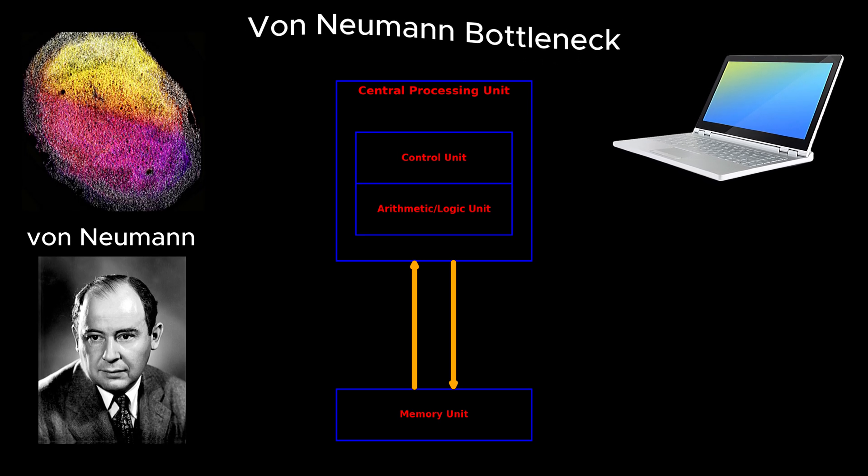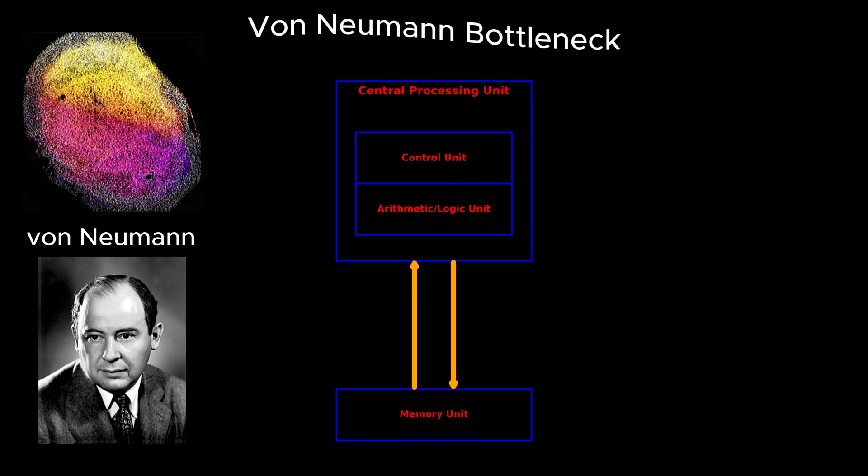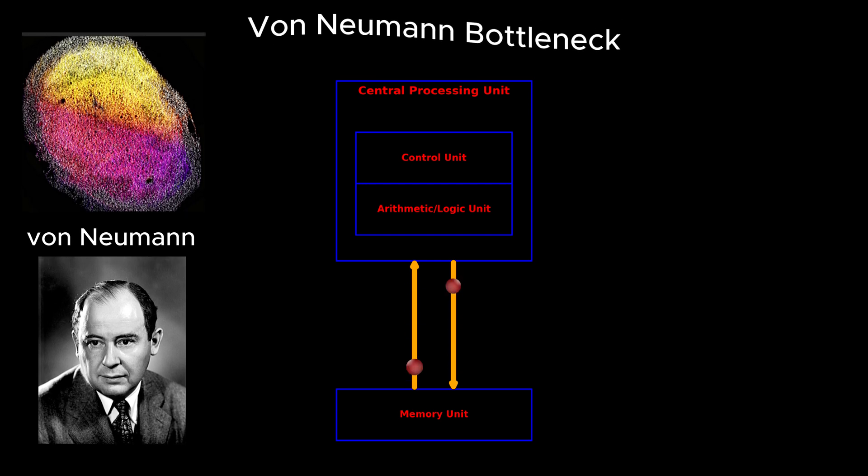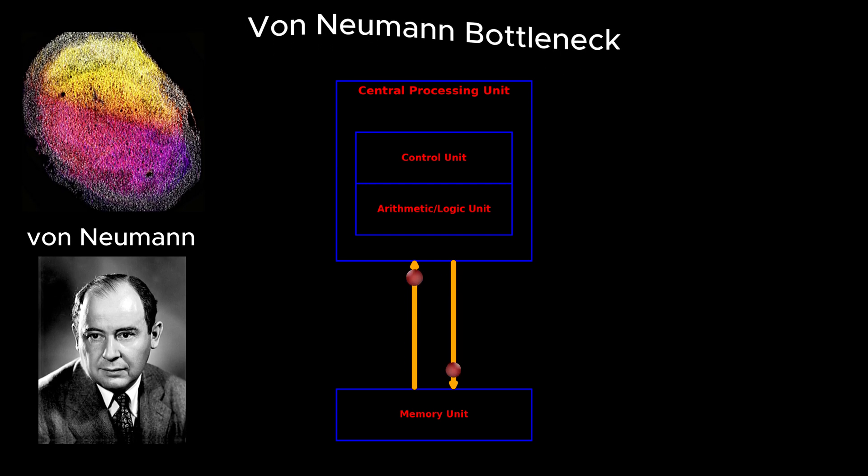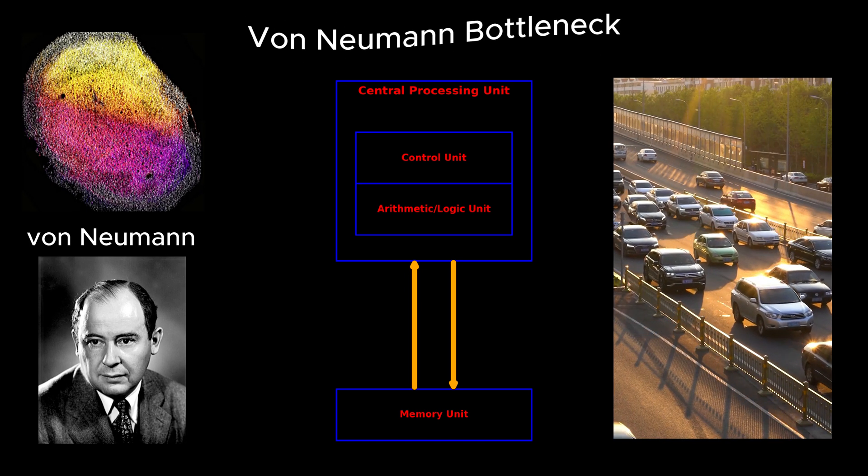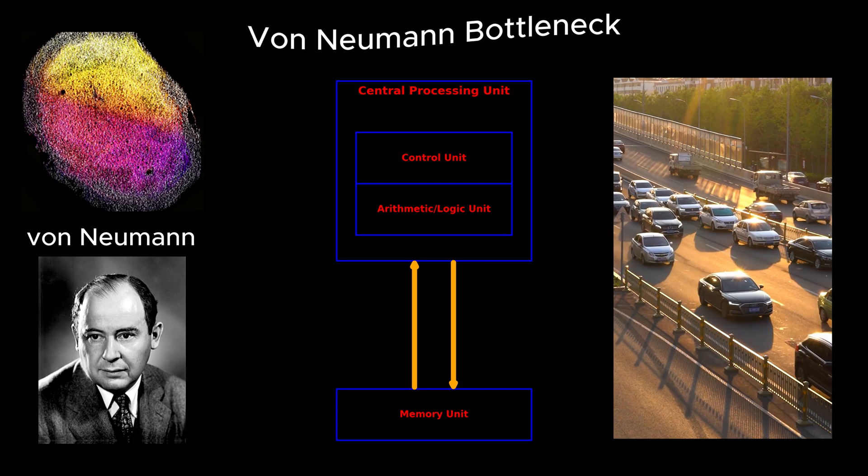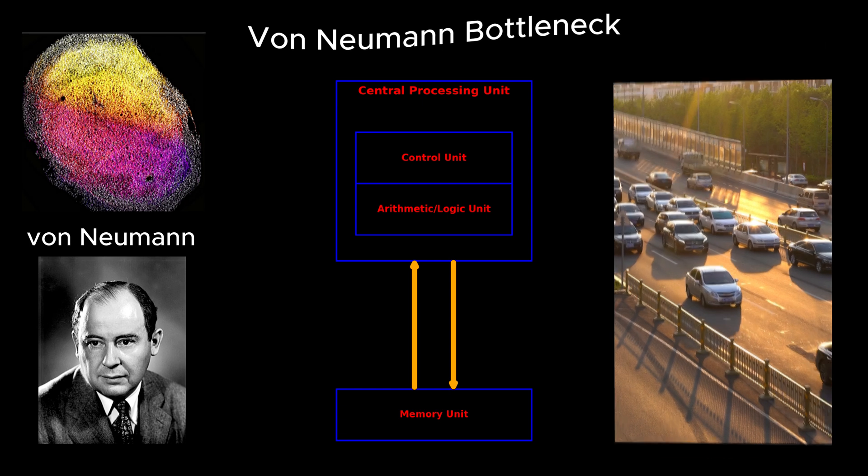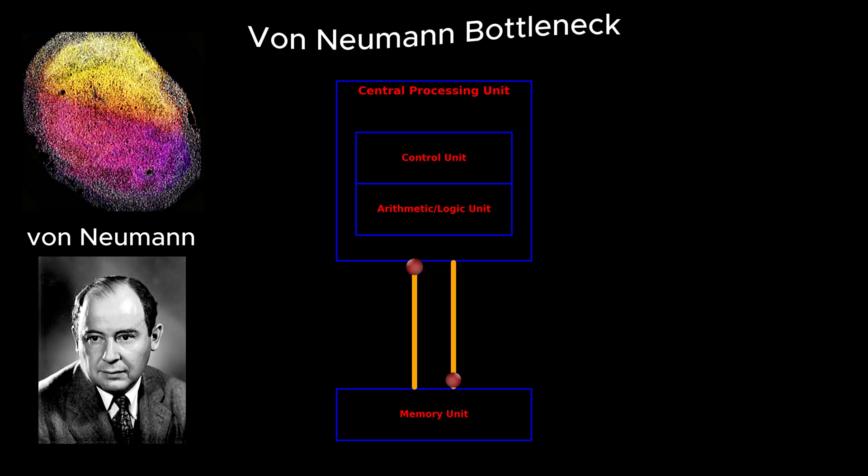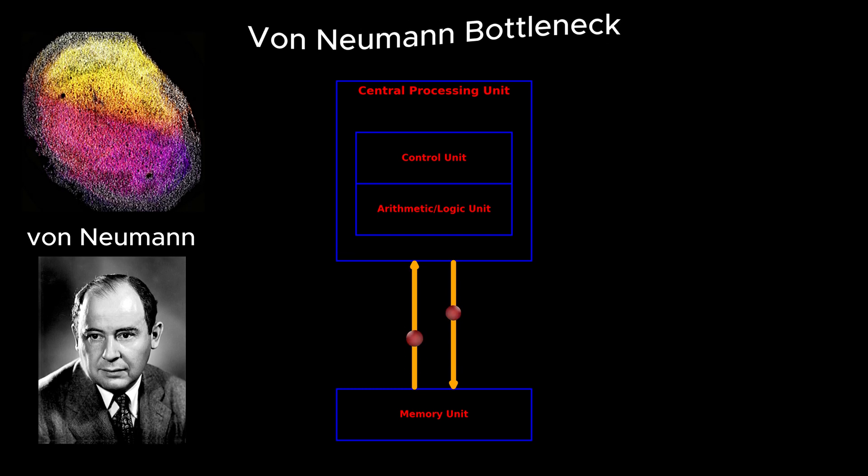Today, even advanced AI hardware separates memory from processing units. This means data has to shuttle back and forth between these two components, creating a bottleneck that slows down performance and drastically increases energy consumption. Imagine a busy highway with only one lane open. No matter how advanced the vehicles are, traffic builds up because the flow is constrained. Similarly, in computing, the constant movement of data wastes both time and energy, making current AI systems inefficient.